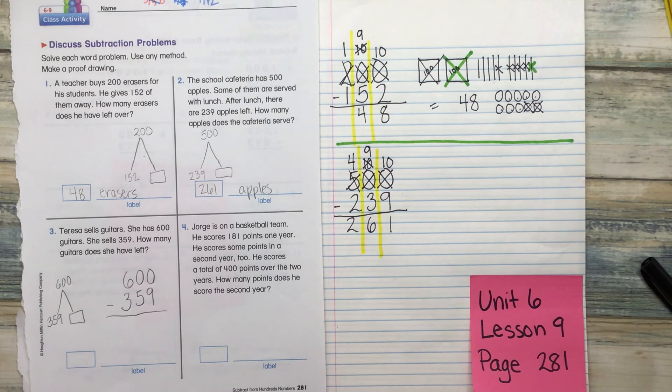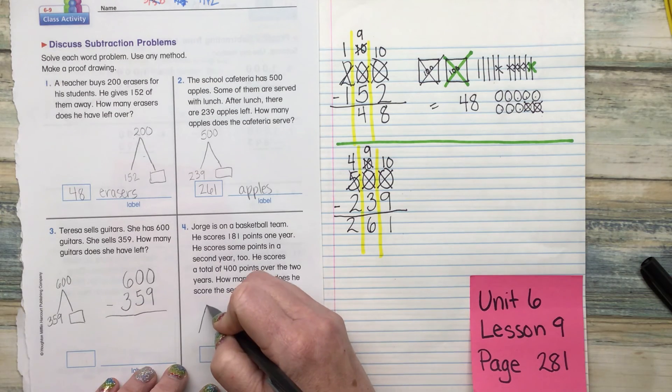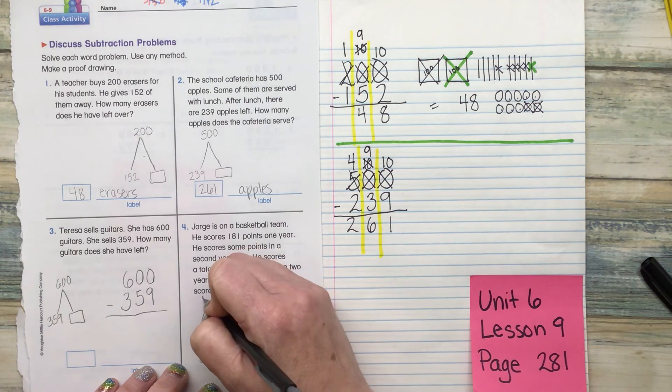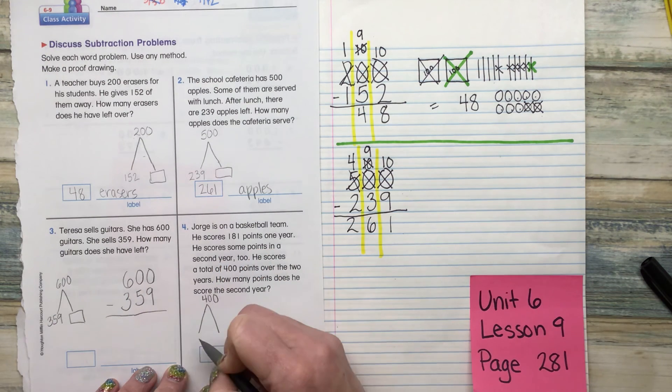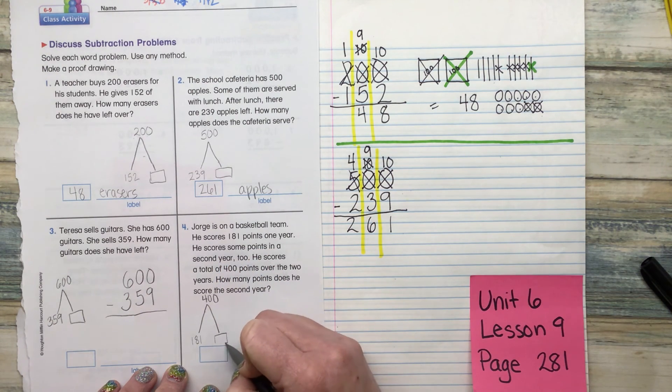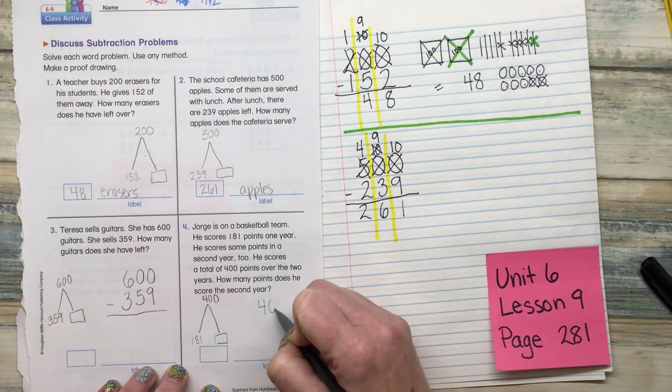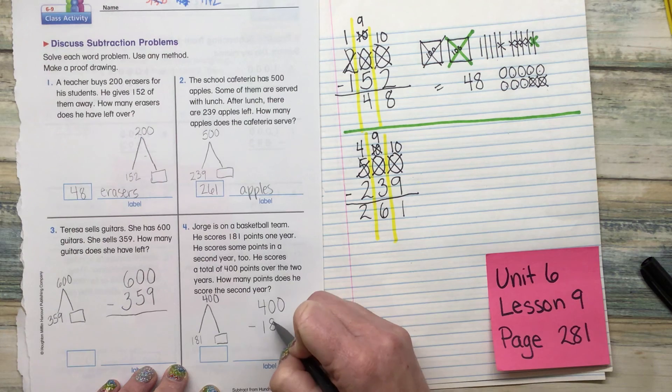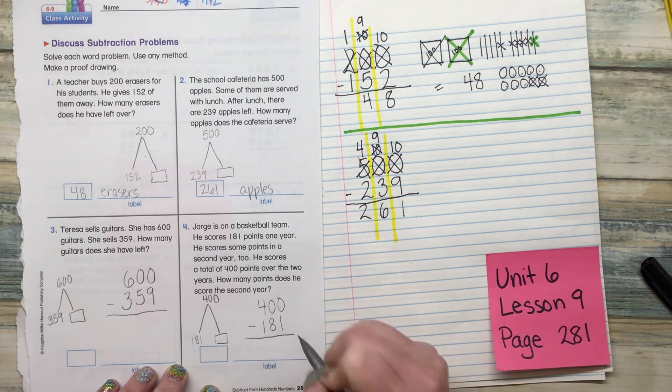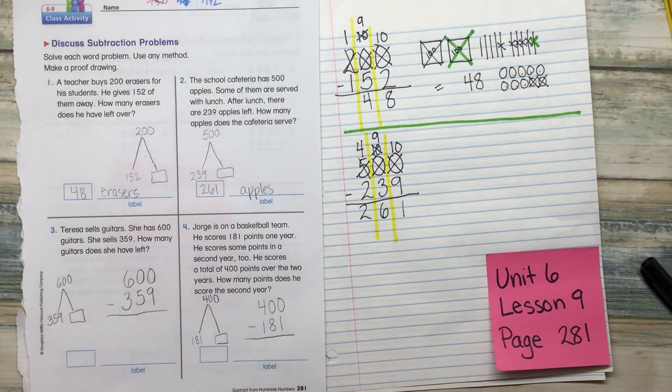Number four says, Jorge is on a basketball team. He scores 181 points one year. He scores some points in his second year too. He scores a total of 400 points over the two years. How many points does he score the second year? So our total is 400. Our partner is 181.